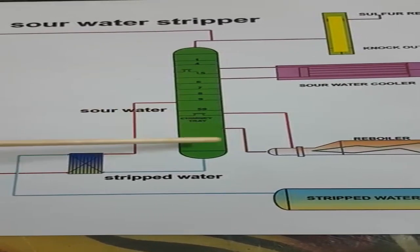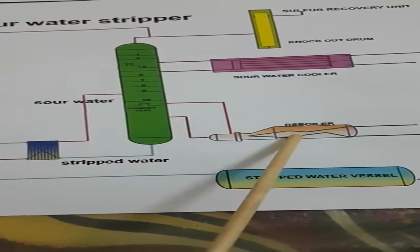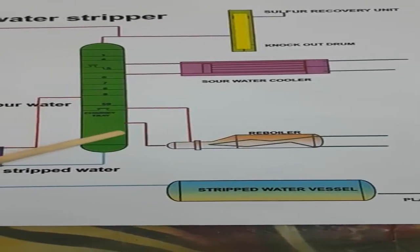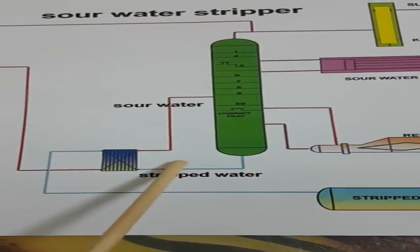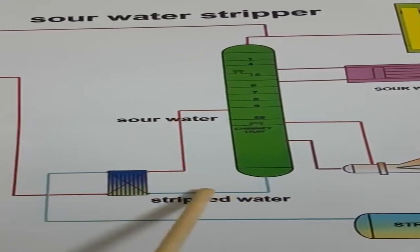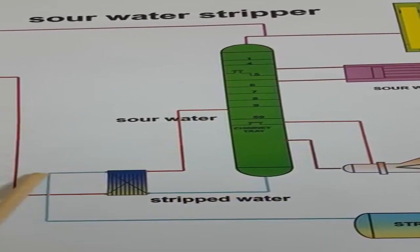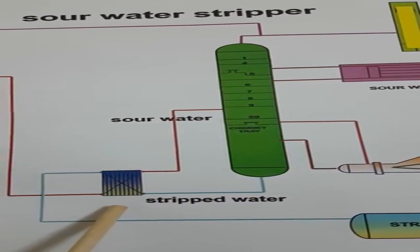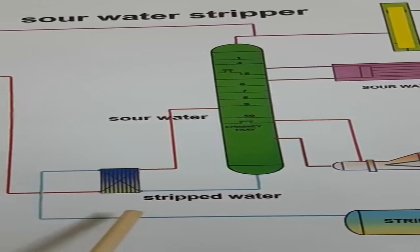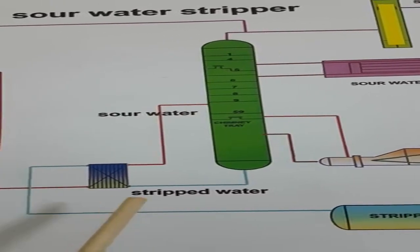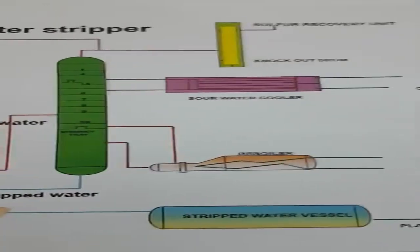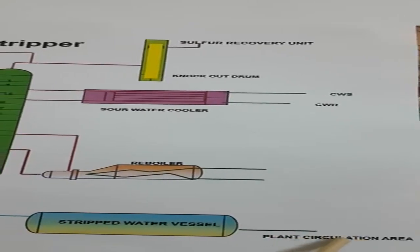The reboiler heats the sour water, and the strip water vessel collects the strip water. A pump delivers strip water to the strip water vessel. From the interchanger, the strip water temperature is reduced. If further cooling is needed to bring temperature below around 70°C, another plate type, shell and tube, or spiral type heat exchanger removes the excess heat from the strip water. Then the strip water is collected and circulated in the plant for reuse.